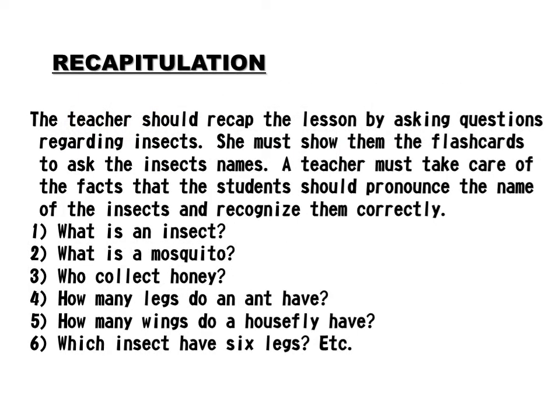Recapitulation: the teacher should recap the lesson by asking questions regarding insects. She must show them the flashcards to ask the insects' names. A teacher must ensure that students can pronounce the names of the insects and recognize them correctly. Questions: One, what is an insect? Two, what is a mosquito? Three, who collects honey? Four, how many legs does an ant have? Five, how many wings does a housefly have? Six, which insect has six legs? Etc.